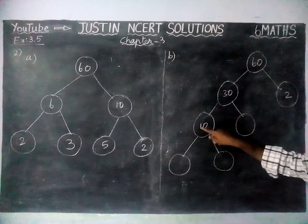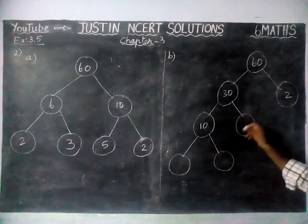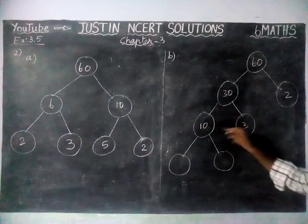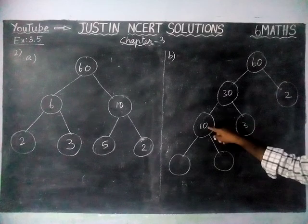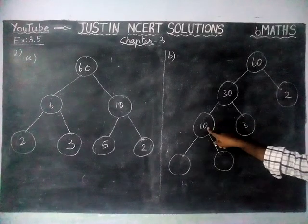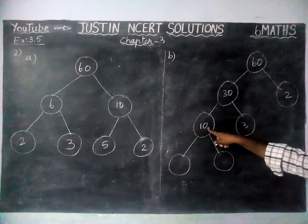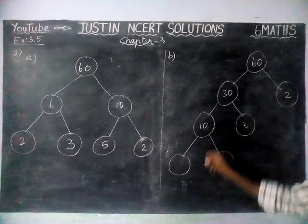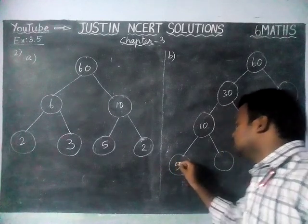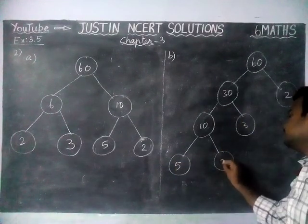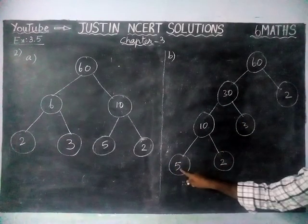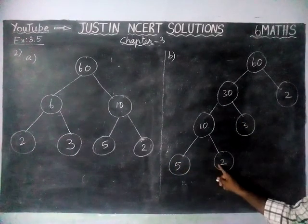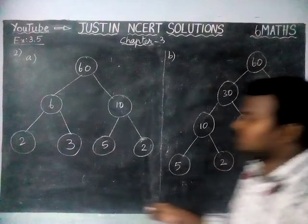Now we are going to separate 30 into 10 and 3. 10 threes are 30. 3 is a prime number, but 10 is not a prime number, so we have to separate it further. 5 twos are 10. 5 is a prime number and 2 is also a prime number.